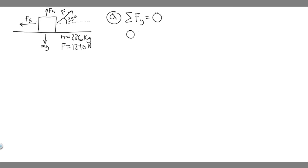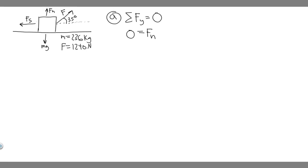So you set 0 equal to the sum of all the forces in the y direction. You don't want the ones that are angled — you want the components that are perfectly in the y direction. We label them positive if they're going upwards and negative if they're going downwards. So we have F sub N going upwards, minus mg because it's going downwards, and then we also have the y component of the force that the horse is exerting.